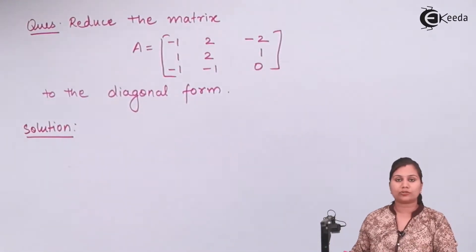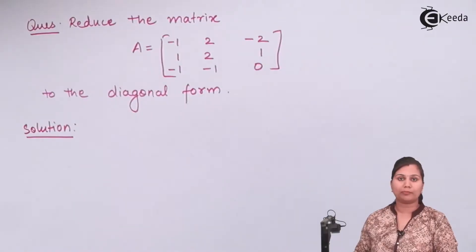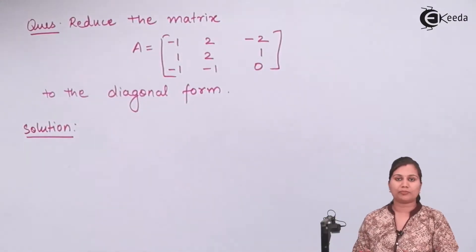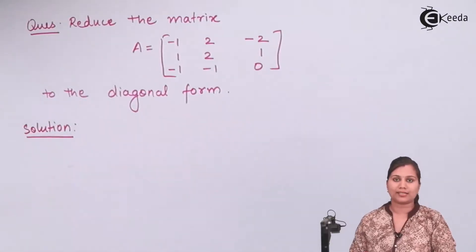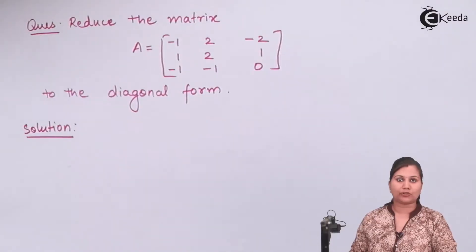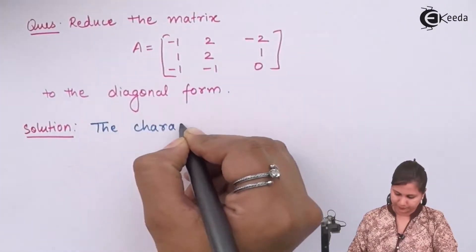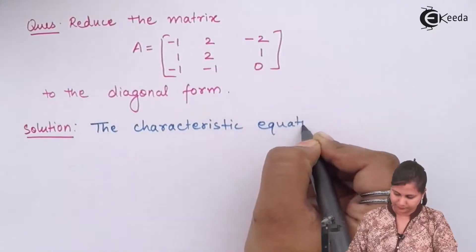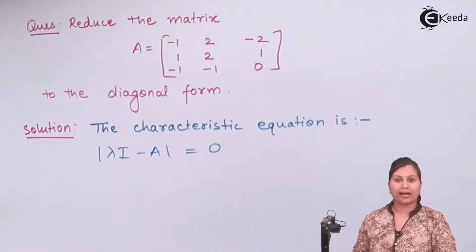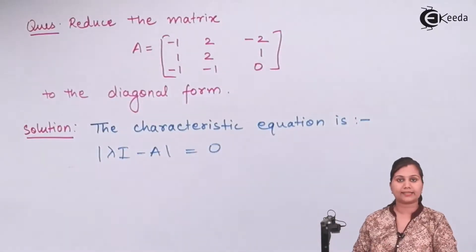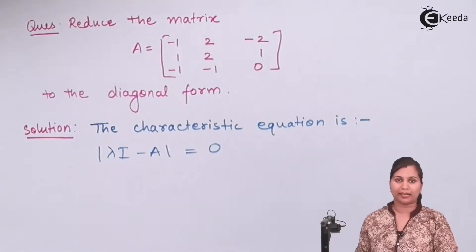To reduce the matrix into the diagonal form, we have to find out the modal matrix. This modal matrix is formed by the eigenvectors, and the eigenvectors are formed from the eigenvalues. So first of all we have to find the eigenvalues of matrix A by writing the characteristic equation: det(λI - A) = 0. The roots of this characteristic equation are the eigenvalues of matrix A.